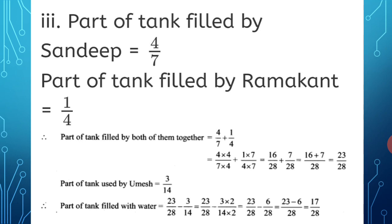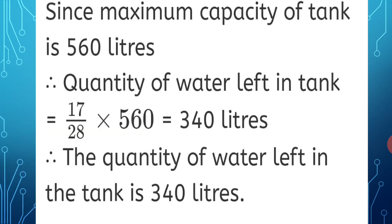Sandeep and Ramakanth together filled 23 upon 28 of the tank, and then Umesh used 3 upon 14, leaving 17 upon 28. Since the maximum capacity of the tank is 560 liters, the quantity of water left = 17 upon 28 × 560 = 340 liters.